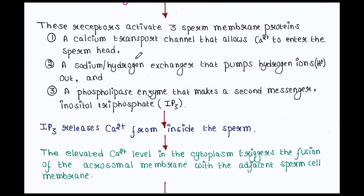The three activated proteins are: a calcium transport channel that allows calcium to enter the sperm head; a sodium-hydrogen exchanger that pumps sodium ions out; and a phospholipase enzyme that makes a second messenger, inositol triphosphate, or IP3. IP3 then releases calcium from inside the sperm.